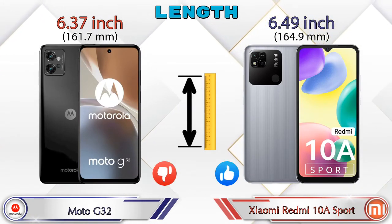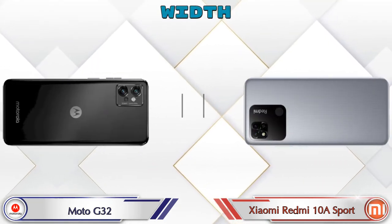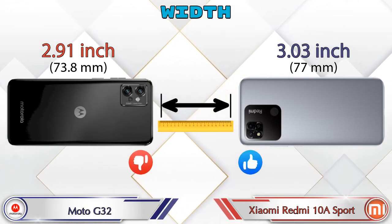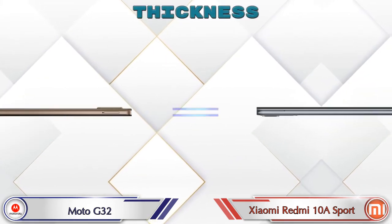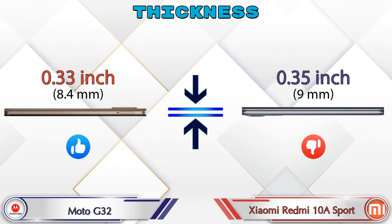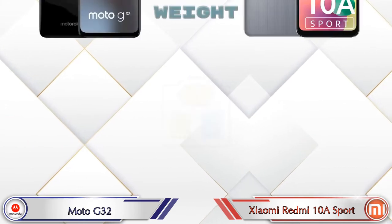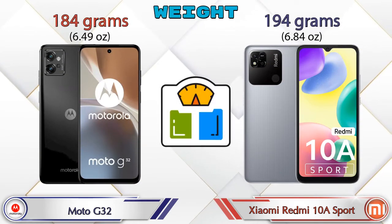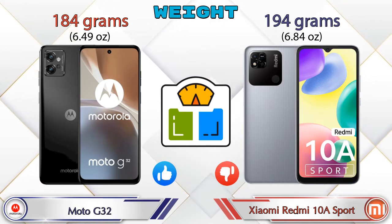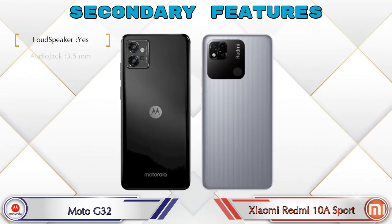Now let's check the dimensions. Talking about length, the G32 is 6.37 inches and the Redmi 10A Sport is 6.49 inches. Width — the G32 is 2.91 inches and the Redmi 10A Sport is 3.03 inches. Thickness — the G32 is 0.33 inches and the Redmi 10A Sport is 0.35 inches, which is bigger than the G32. Talking about weight, the G32 is 184 grams and the Redmi 10A Sport is 194 grams, which is heavier than the G32.